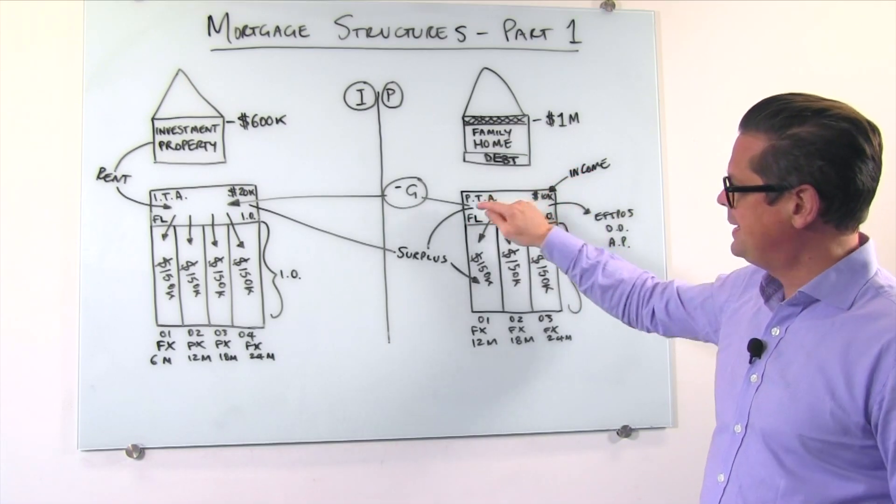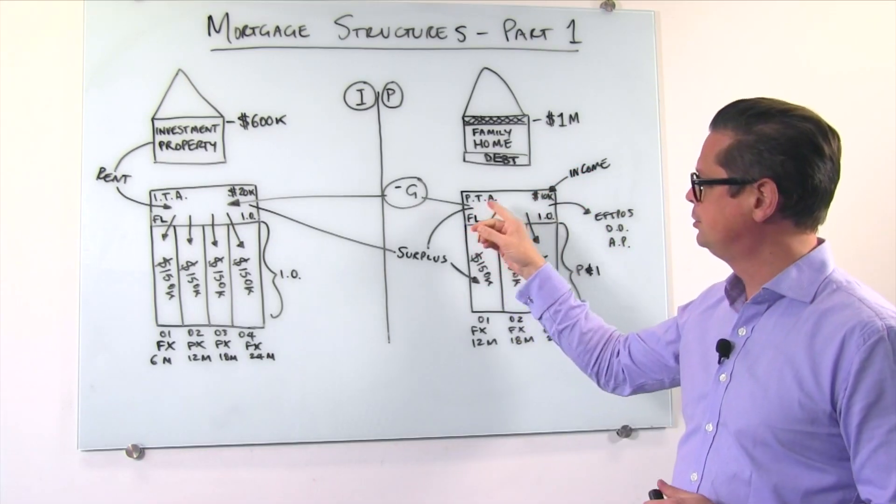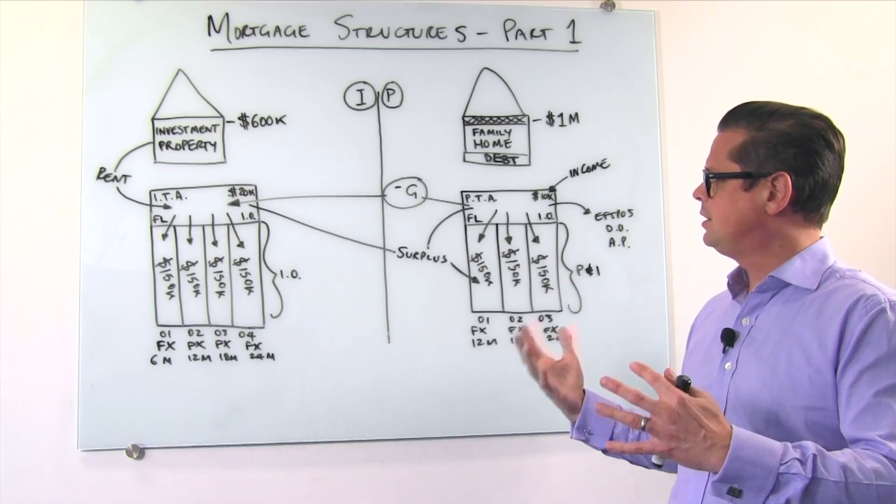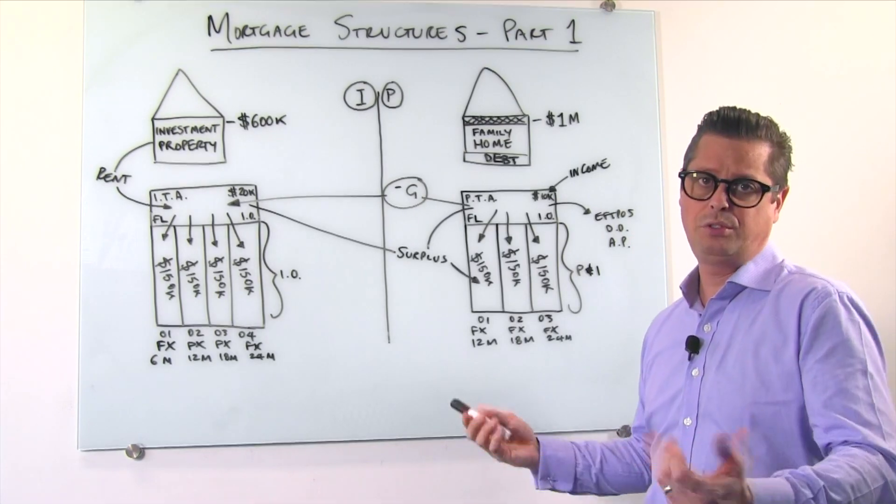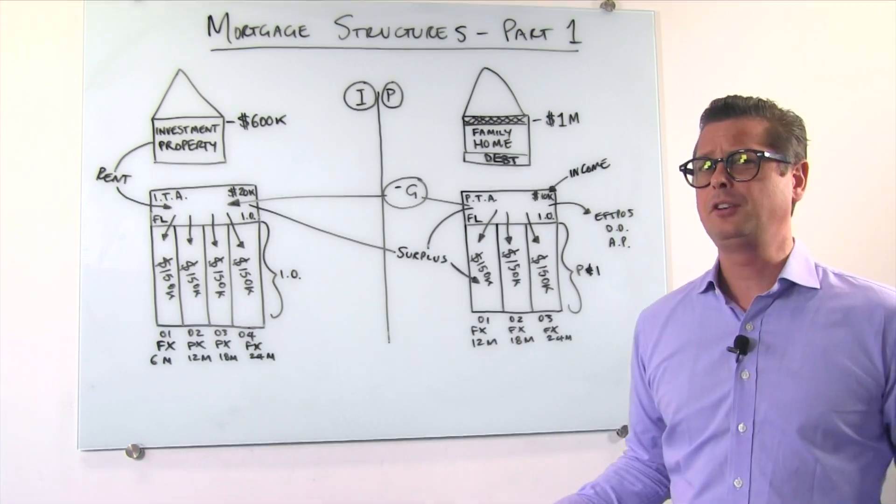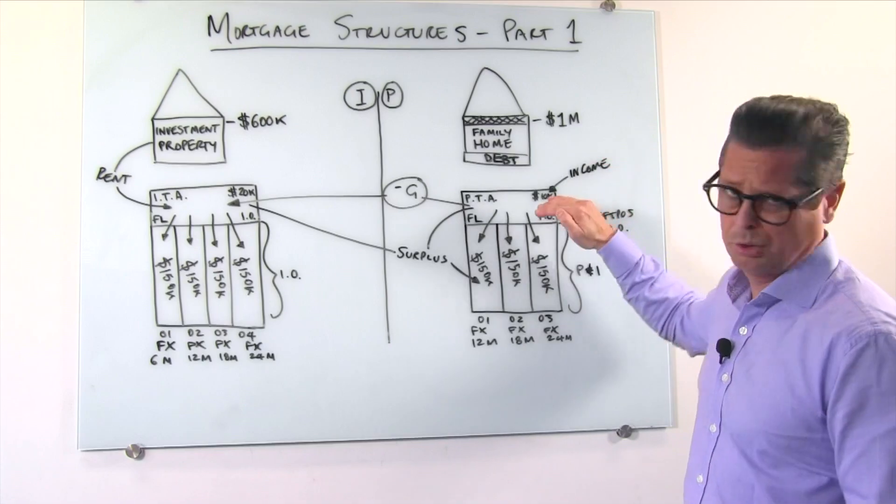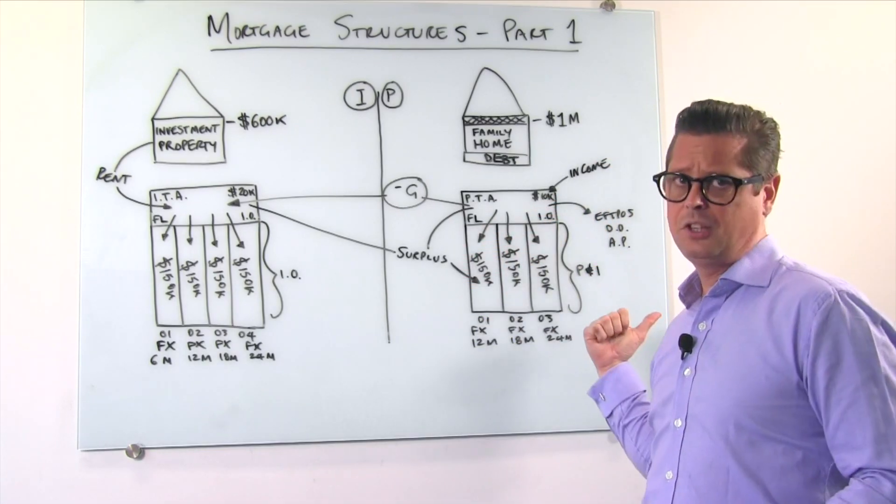First of all we have what we call a PTA set up, Personal Transaction Account. We just generically call it that because every bank has their own name for that kind of account. It's not hard to understand what it does. Your income goes in there and you spend your money out of it.